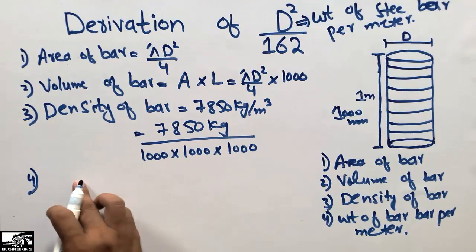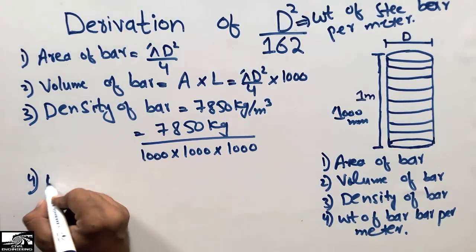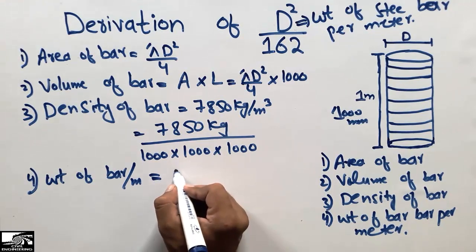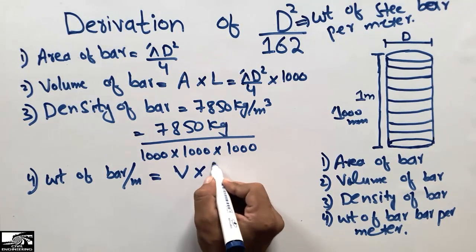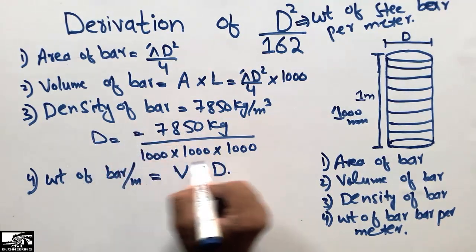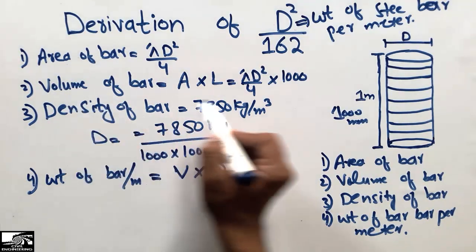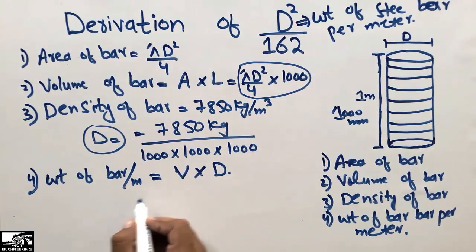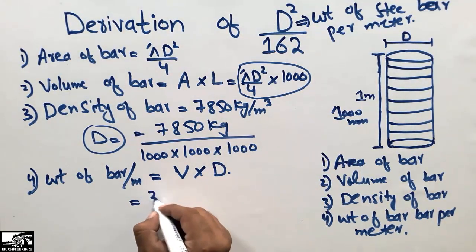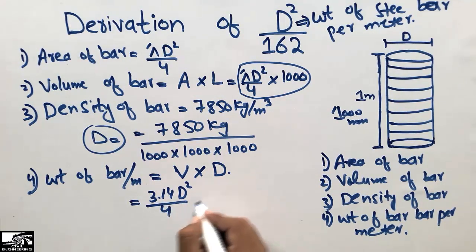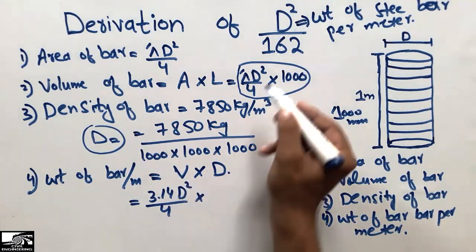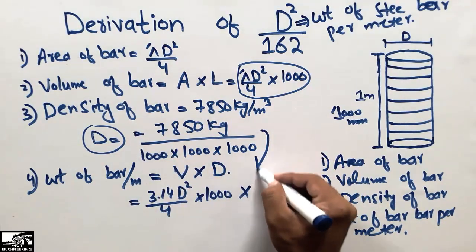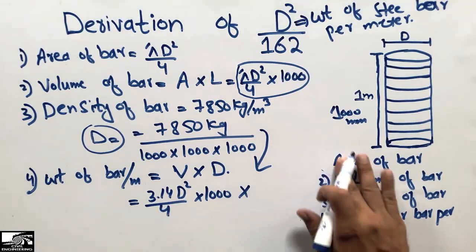The fourth step is to find the weight of the bar per meter. Weight of the bar per meter equals density multiplied by volume of the bar. The volume is πD²/4 multiplied by 1000 mm, where π is 3.14. The density is 7850 divided by (1000 × 1000 × 1000). We now multiply these two together to get the weight per meter.